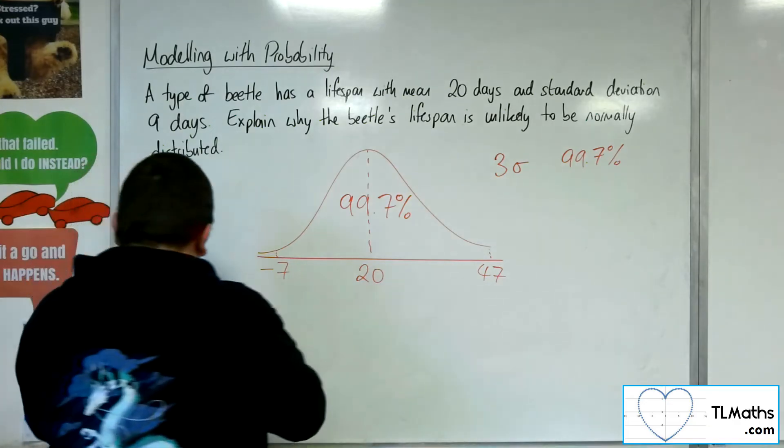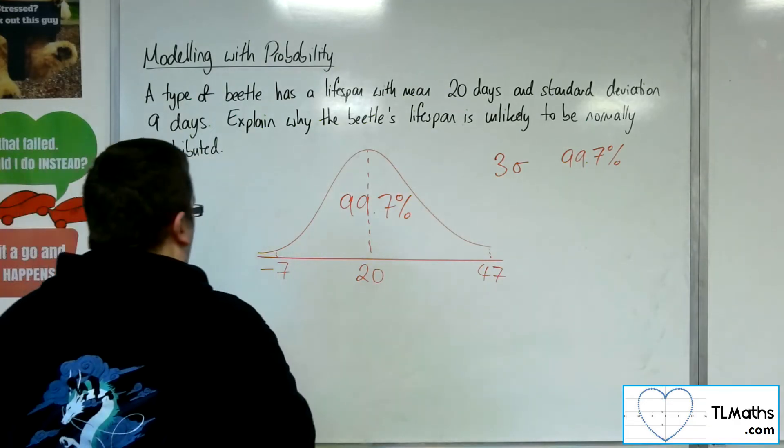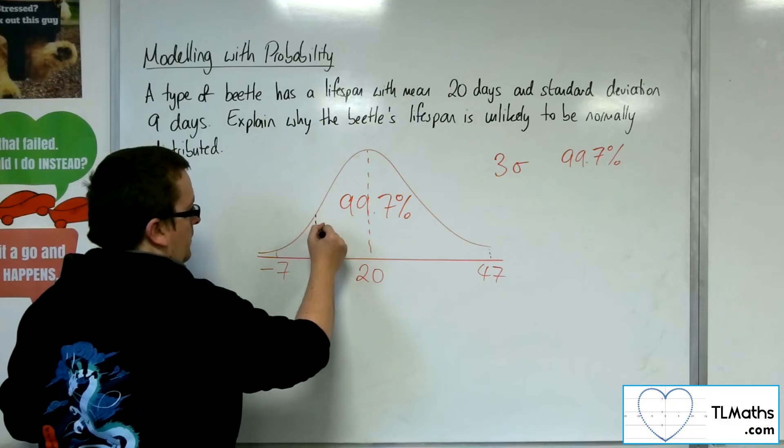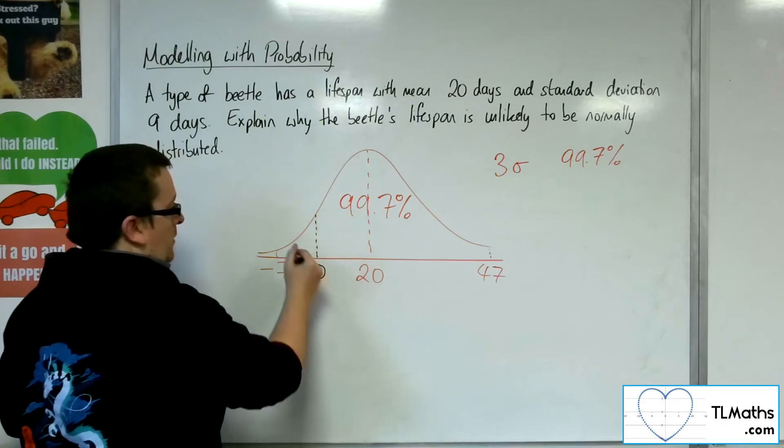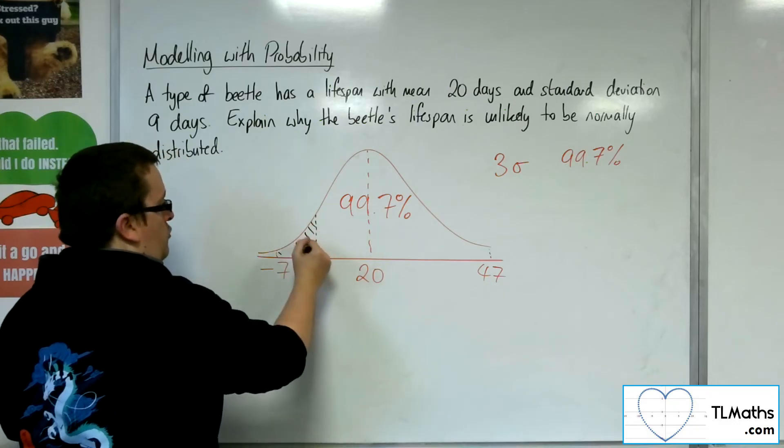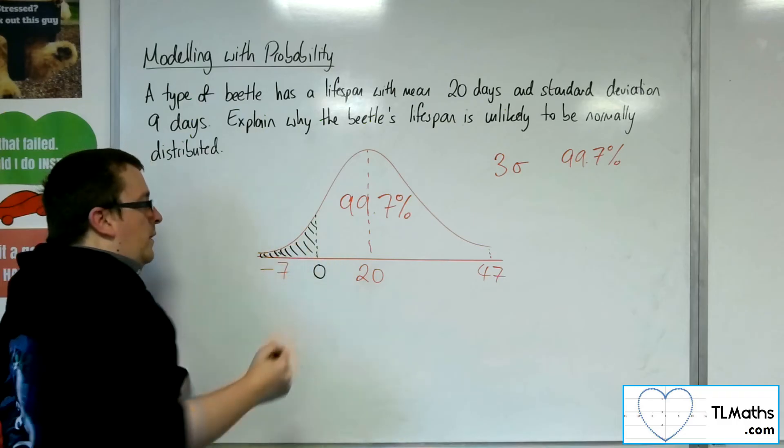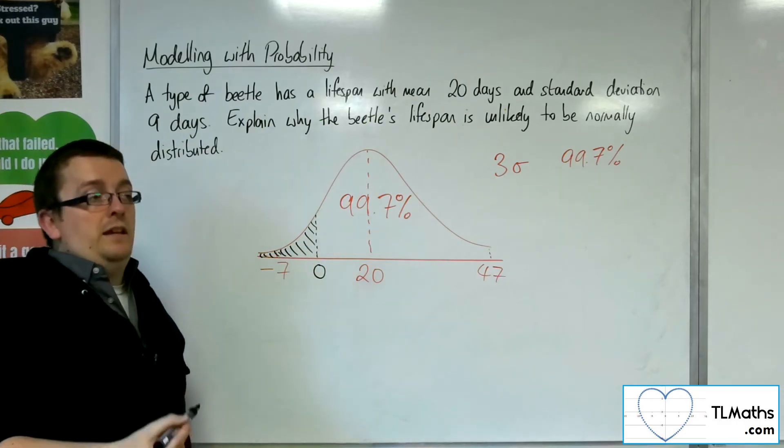So what we would have is actually a large proportion of our normal distribution would actually be in negative age.